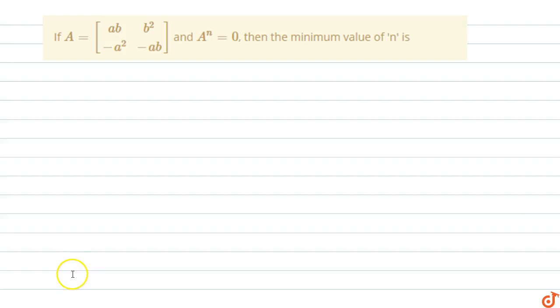In this question, if matrix A equals [[ab, b²], [-a², -ab]], and A^n equals zero, then find the minimum value of n. So matrix A is given there, and A^n equals zero. We need to find the minimum value of n.